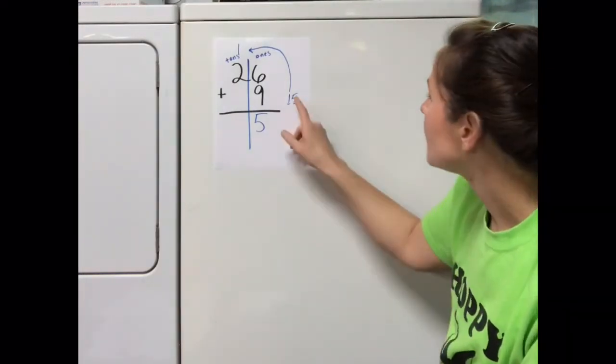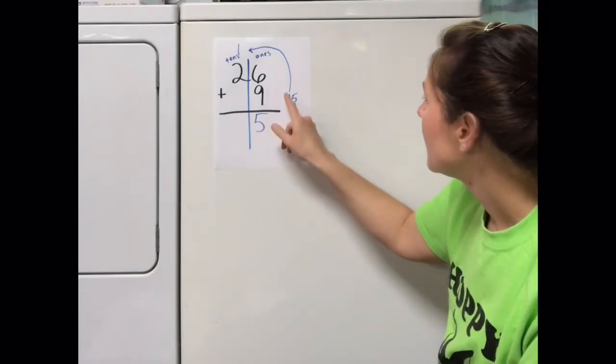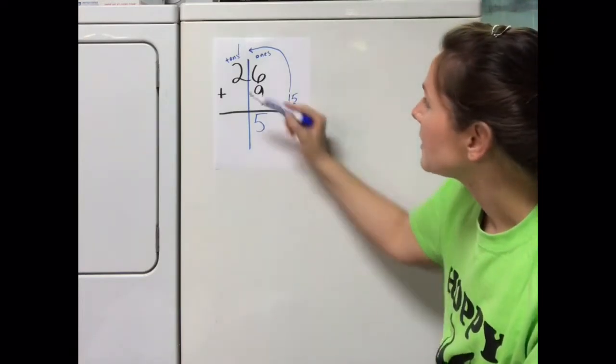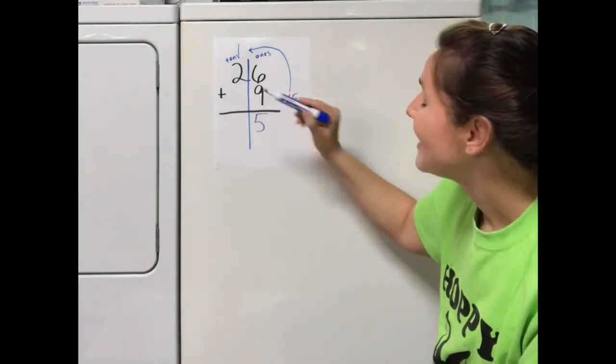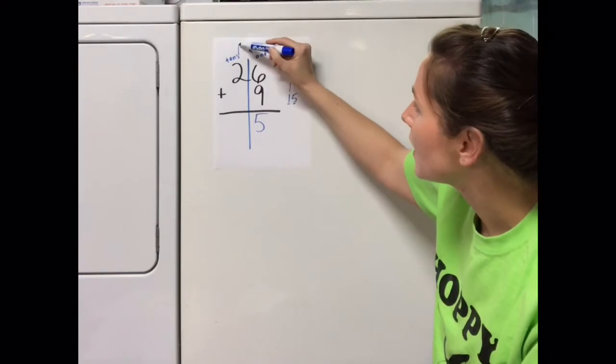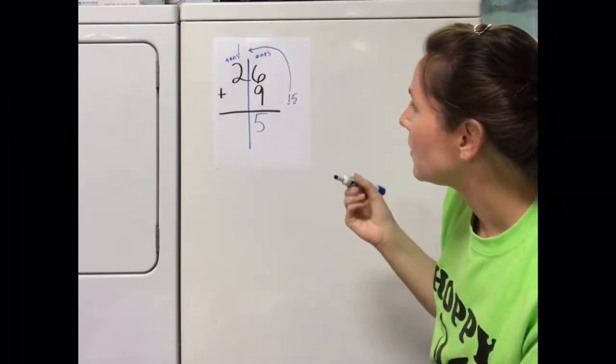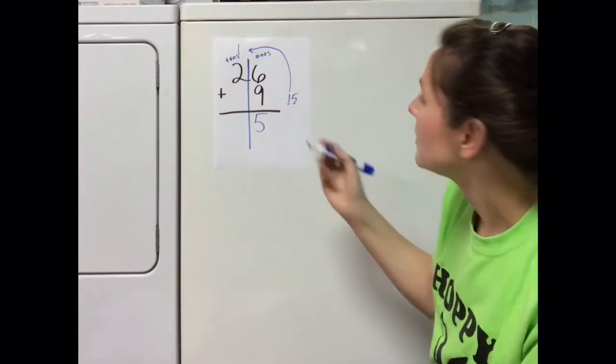So I still have both the digits that make up the number 15. I've just got the 5 down here and the 1 up here. Now let's take a look at that tens column. Instead of having 2 plus nothing, now our tens column is 1 plus 2 plus nothing, and 1 plus 2 plus nothing is equal to 3.